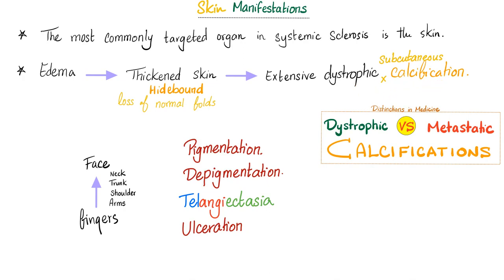Dystrophic calcification is local — caused by local injury, such as necrosis in a finger. Metastatic calcification is global — caused by a systemic disease such as hyperparathyroidism, where excess parathyroid hormone raises serum calcium, leading to calcification everywhere: trachea, endocardium, skin, all over the place. That is metastatic calcification — caused by a systemic process.